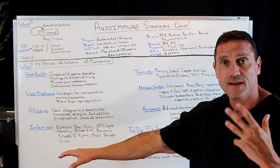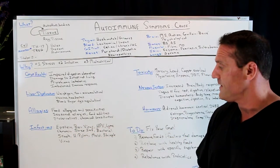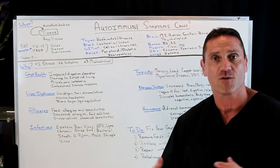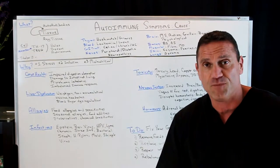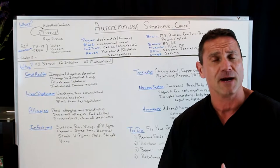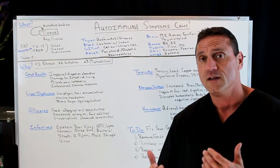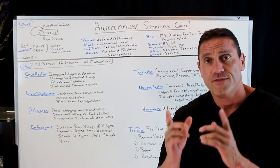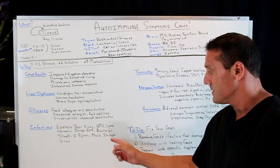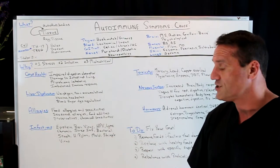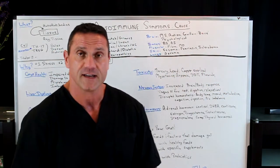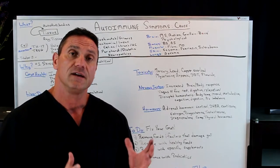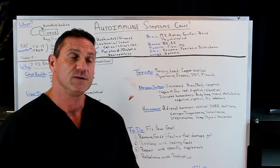Infections: Epstein-Barr, HPV, Lyme, chronic strep, bacterial staph, H. pylori. If you have an H. pylori infection in your gut, fix your gut. Mold, shingles, any type of viral variables — things like that, yes, that could trigger your autoimmune condition.